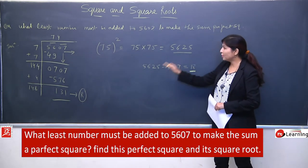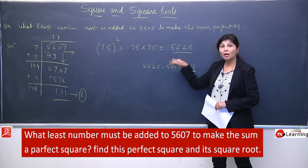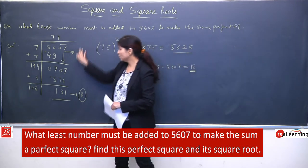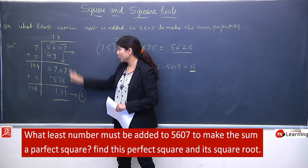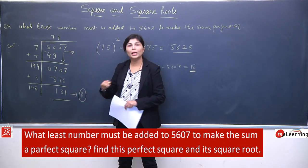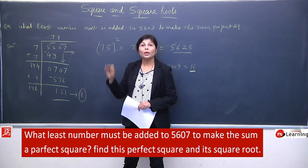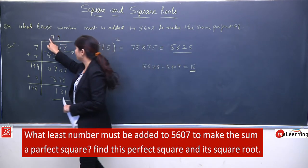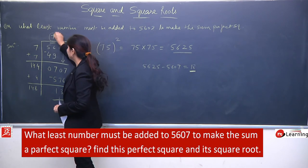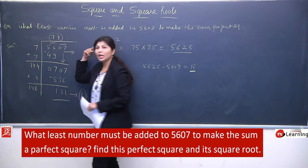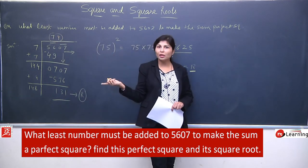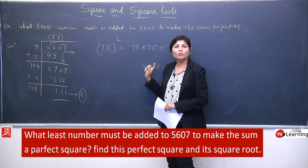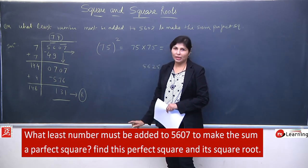Toh summary: nearest number find karna tha — add karke karna hota toh long division method se jo answer milega, usse ek successor lenge, uska square find karenge, aur actual number se subtract karenge. Added wale question mein jo bhi long division method se milega, usse ek number zyada lenge, uska square find karenge.